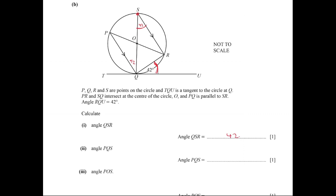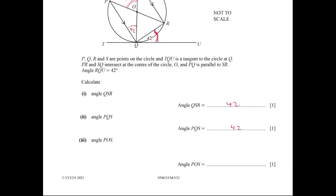The two lines are parallel — you can see the Z letter for alternate angles — so measure angle PQS is also equal to 42. Measure angle POS is a central angle. The measure of the central angle is double the measure of the inscribed angle subtended by the same arc, so measure angle POS equals 42 times 2, which is 84.